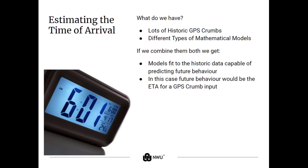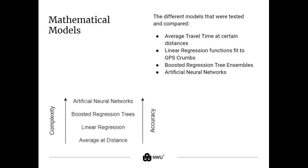Now in order to plan, we need to accurately estimate the time of arrival. We do this by fitting mathematical models to historic data given by many transport companies. These models should be able to map trends in the data and then from those trends determine the ETA more accurately than just estimating it. The models that will be compared for the final system are the average travel time, linear regression models, boosted regression trees, and artificial neural networks.